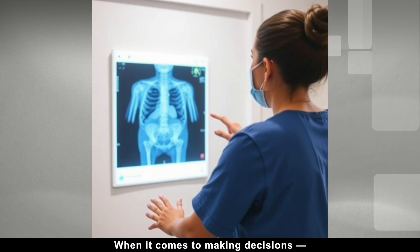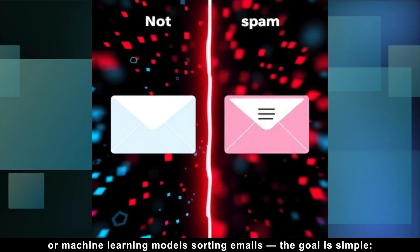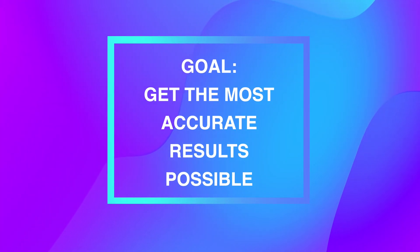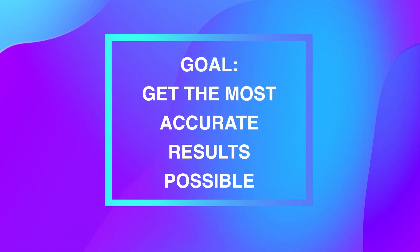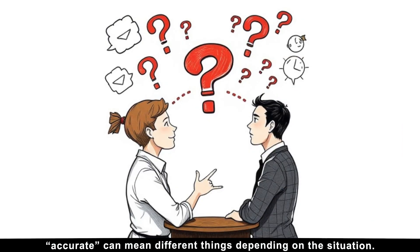When it comes to making decisions, whether it's medical tests like cancer screening or machine learning models sorting emails, the goal is simple: get the most accurate results possible. But here's the tricky part. Accurate can mean different things depending on the situation.